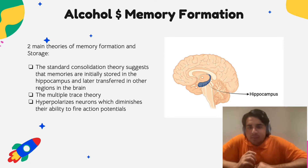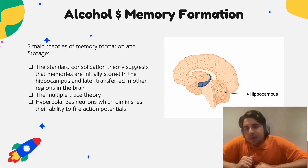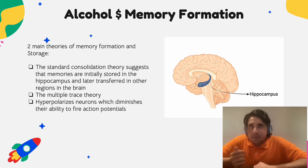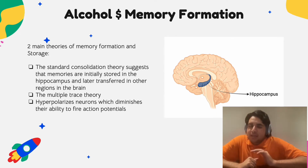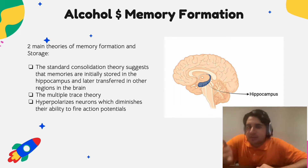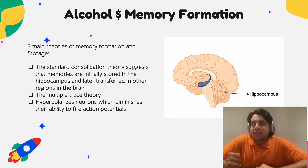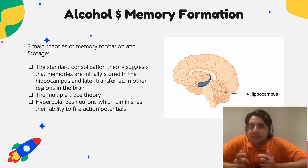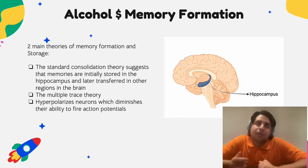In contrast, the multiple trace theory does make a distinction between semantic and episodic memory formation. It agrees that semantic memories are first stored in the hippocampus and gradually transferred to the cerebral cortex. However, for episodic memories, it says that while memories do get transferred to other brain regions, they also remain in the hippocampal tissue. The connections between the cerebral cortex and hippocampus don't diminish over time, so you always need the hippocampus when recalling episodic memories.